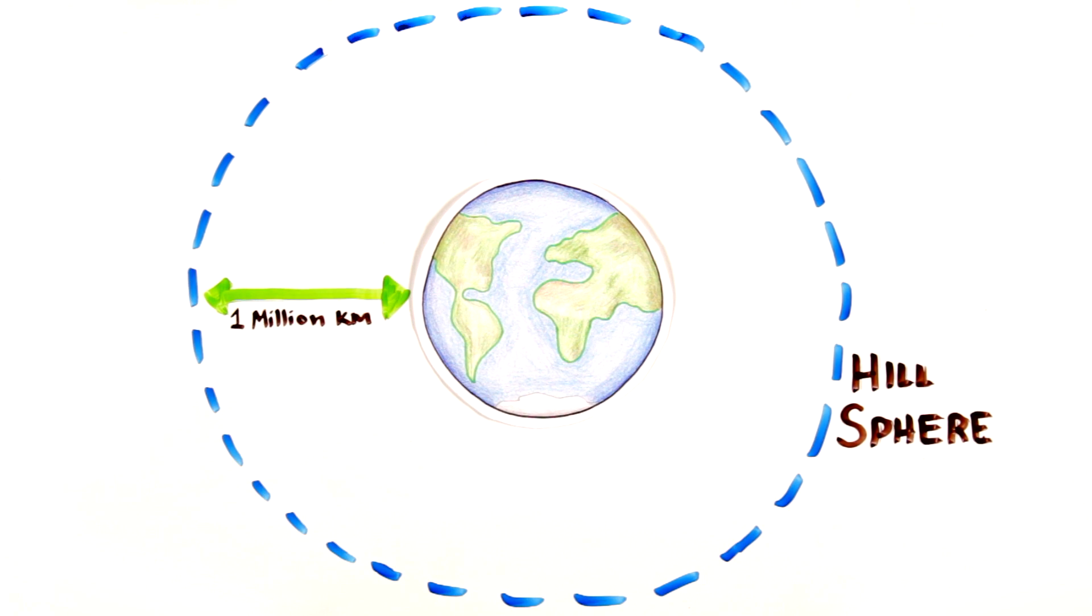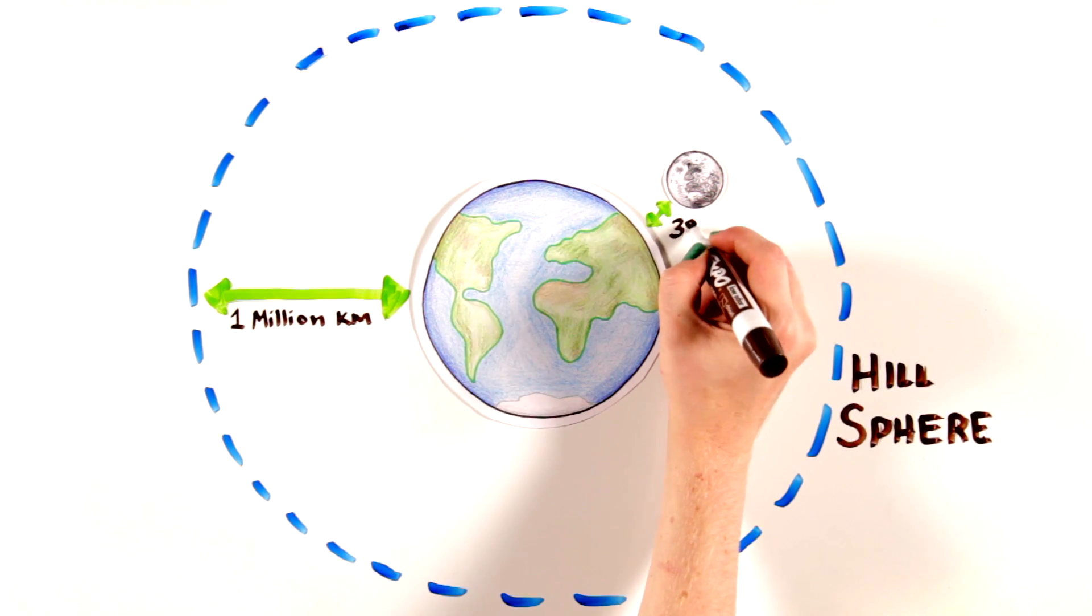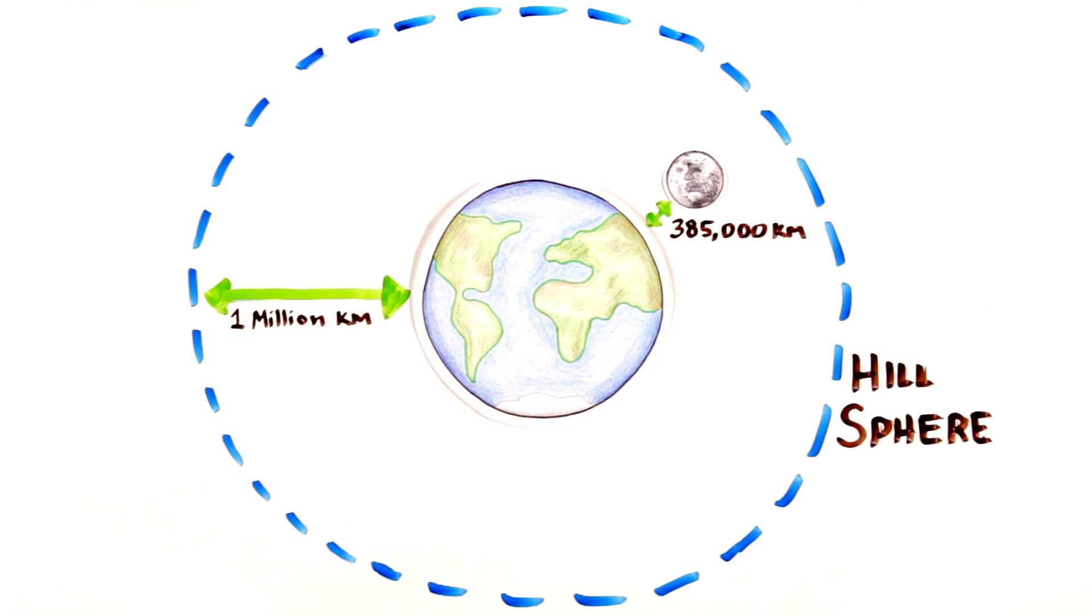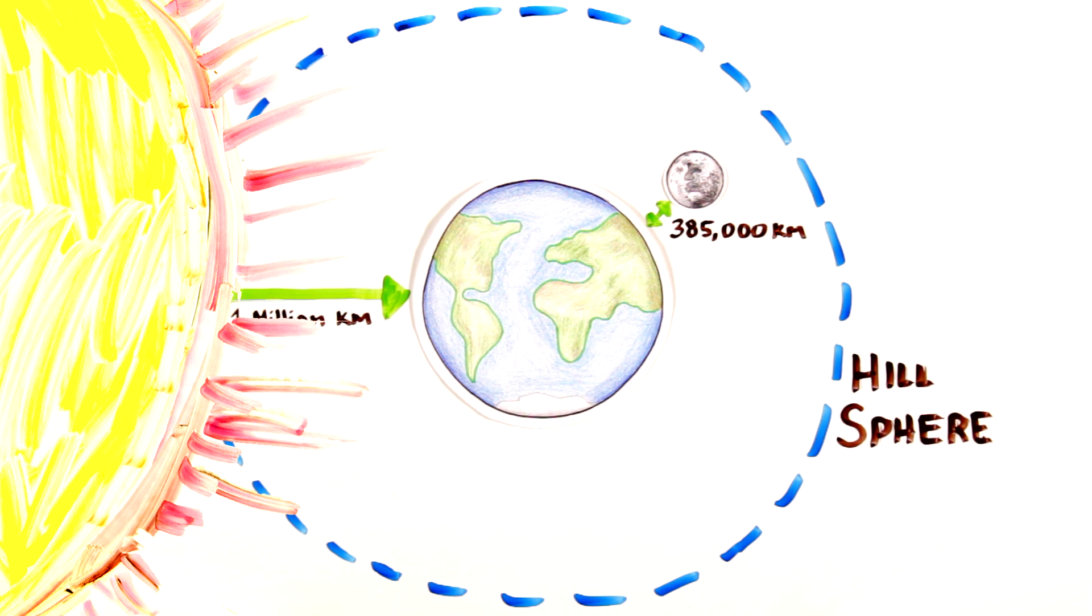Earth's sphere of influence extends out to almost one million kilometers. For reference, our moon is on average only about 385,000 kilometers from the Earth. So our moon is well within Earth's sphere of influence, which keeps it in orbit around the Earth even though there are more massive objects in the solar system, like the Sun.